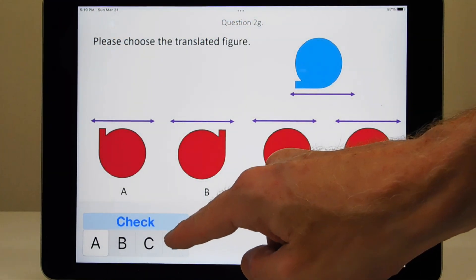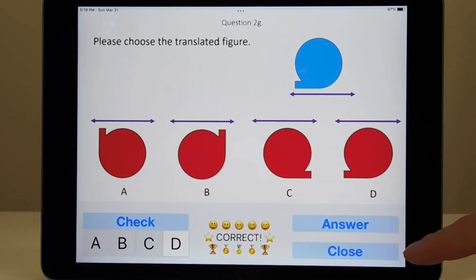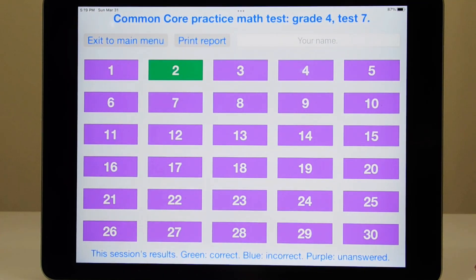If a student answers a question correctly, we give an encouraging message, and the button for that question turns green.